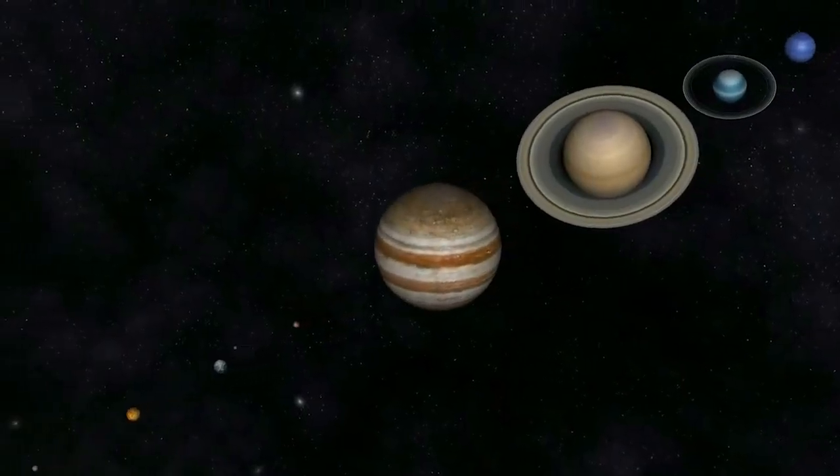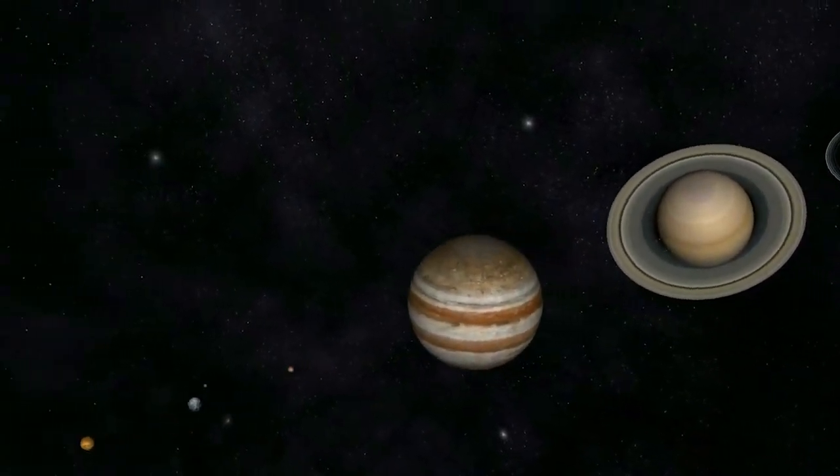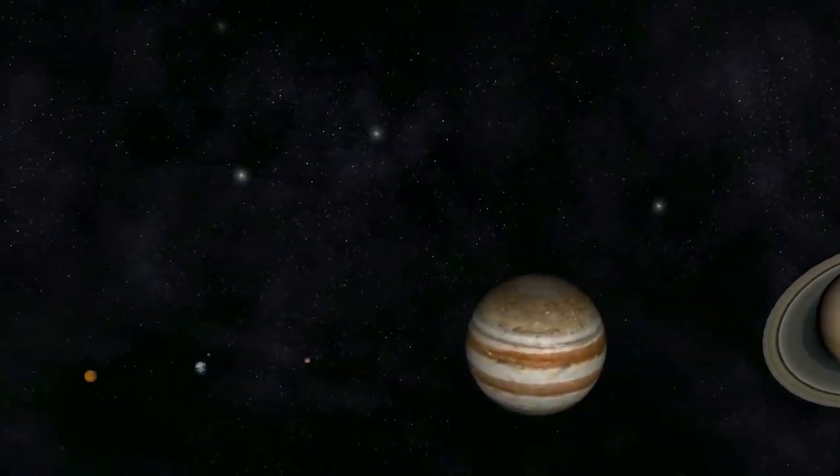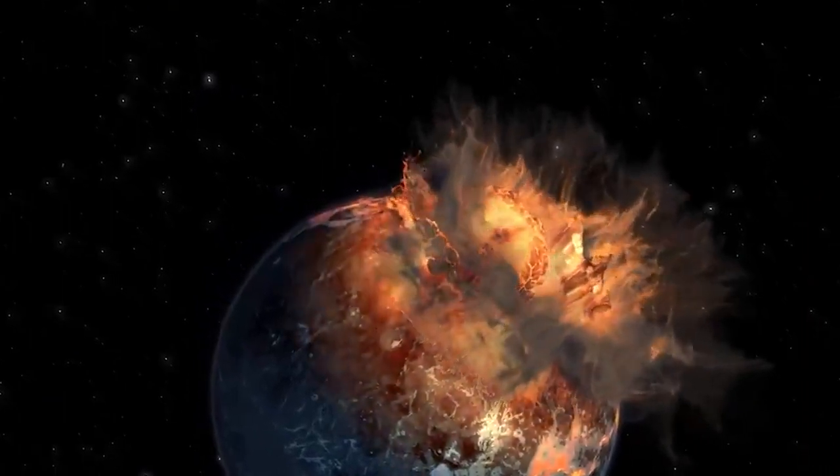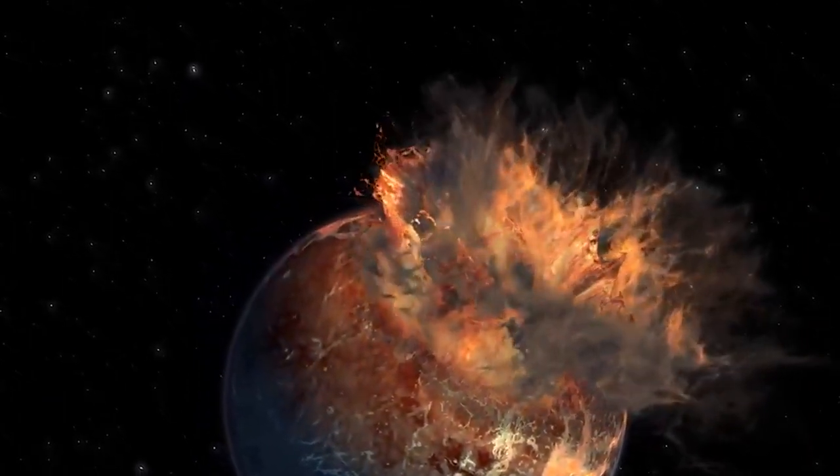At the time, Jupiter's gravity was 30 times greater and had an impact on other planets' orbits, pulling them into the gas giant. One of these was that planet, and it contained a silicate ice center when it hit Jupiter at 29 miles per second.